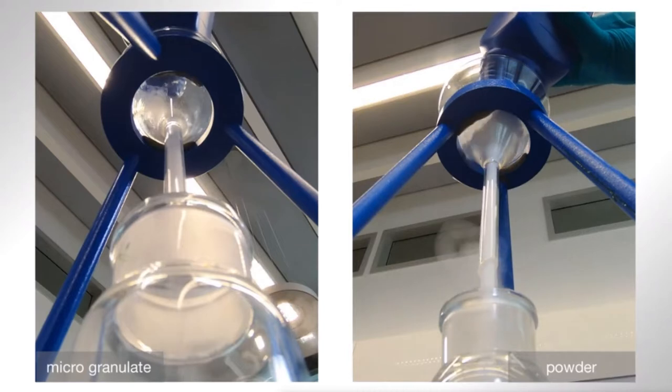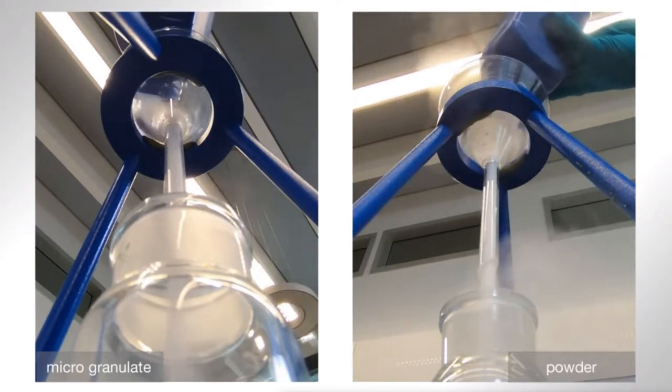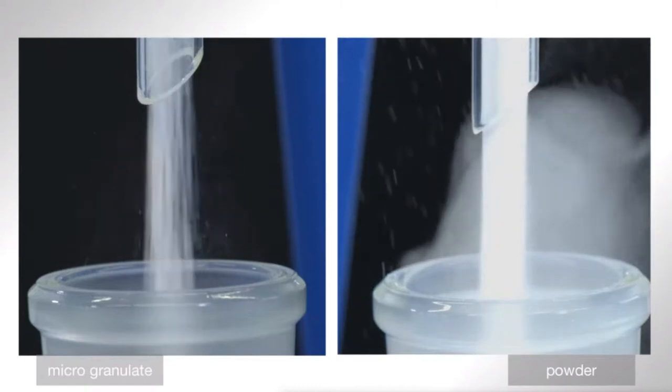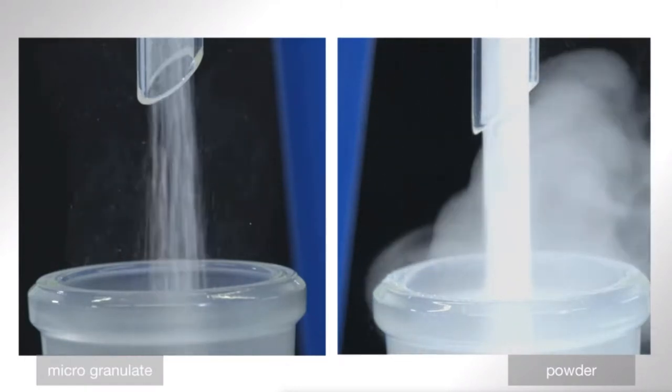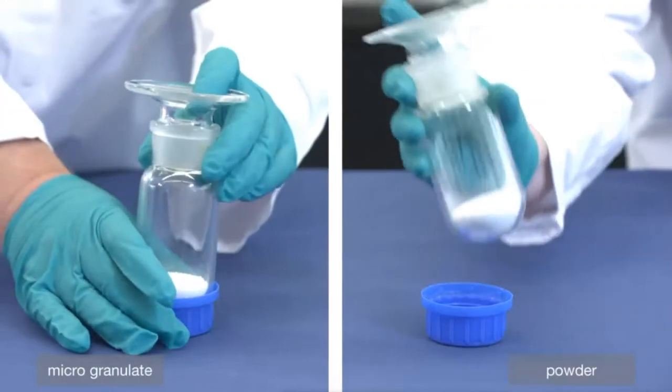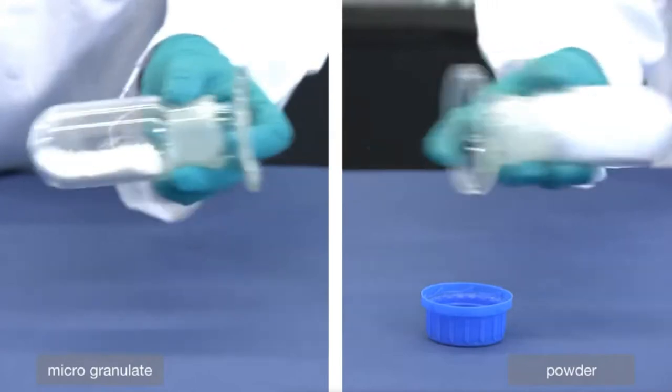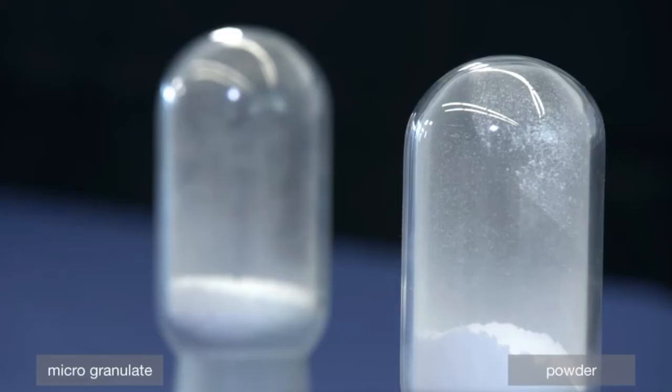The new product form shows excellent dust reduction when compared to a standard powder. High dust content can be observed over the flowing powder. The microgranulate is less susceptible to electrostatic charge buildup. The danger of dust explosion is reduced due to the lower dust formation.